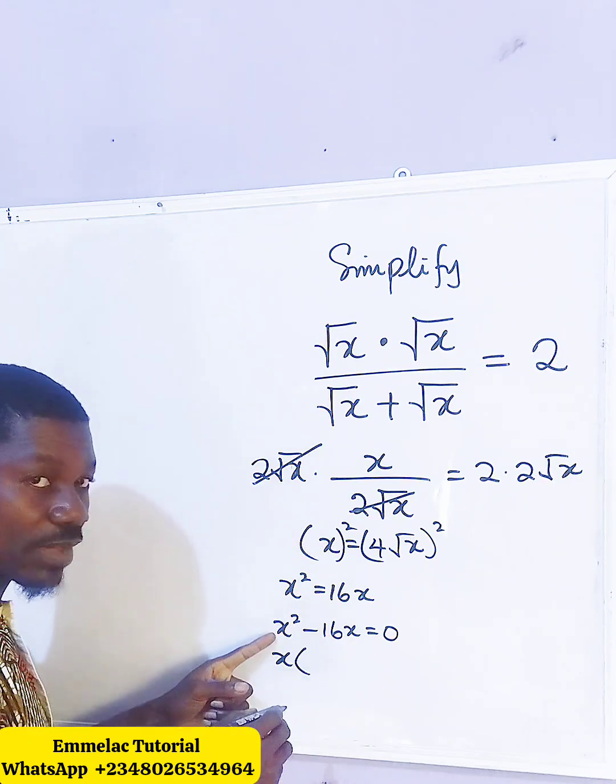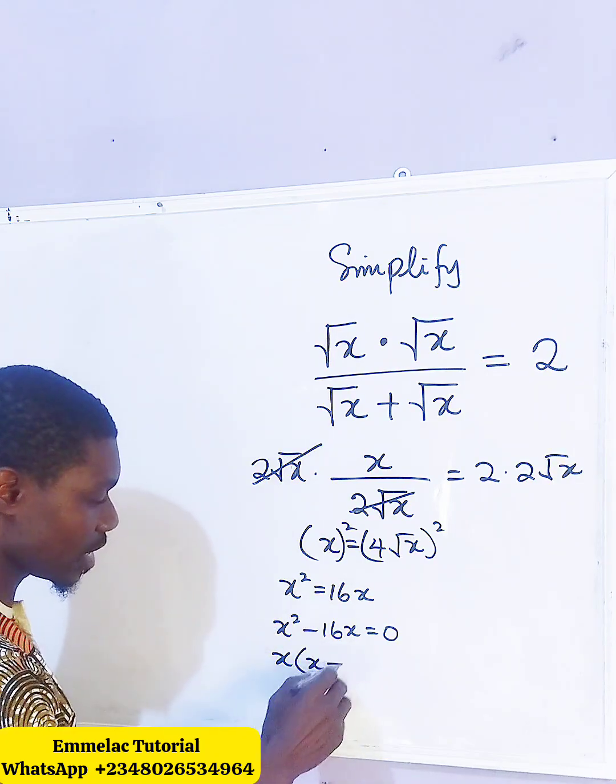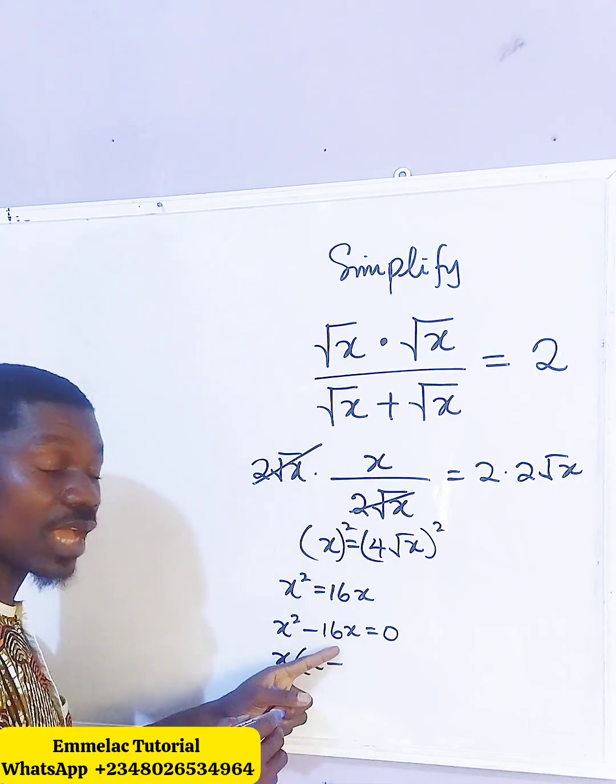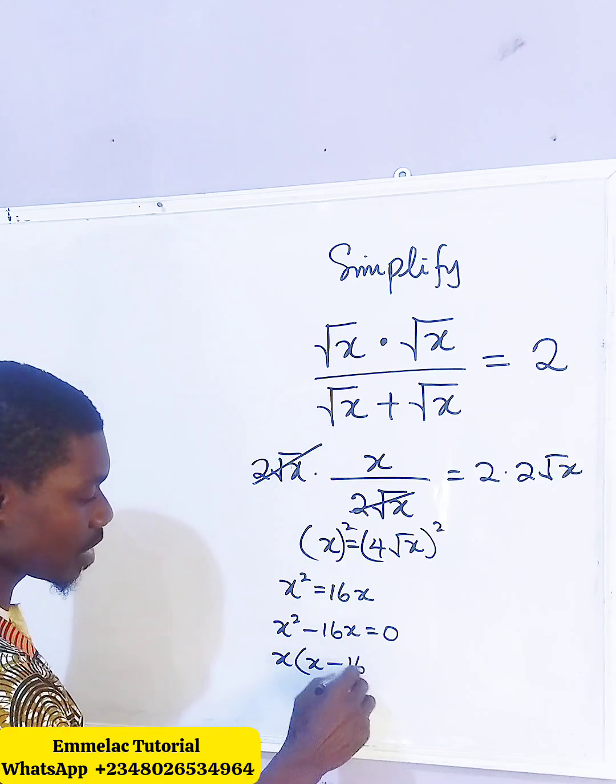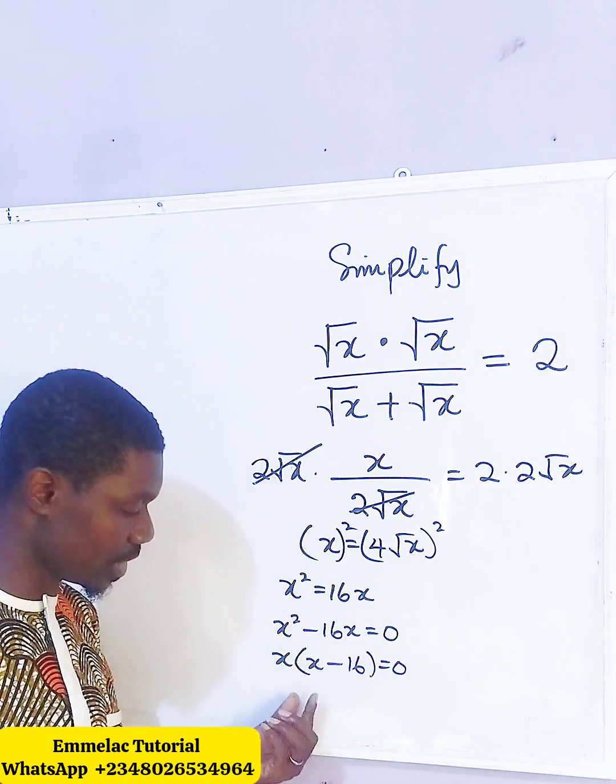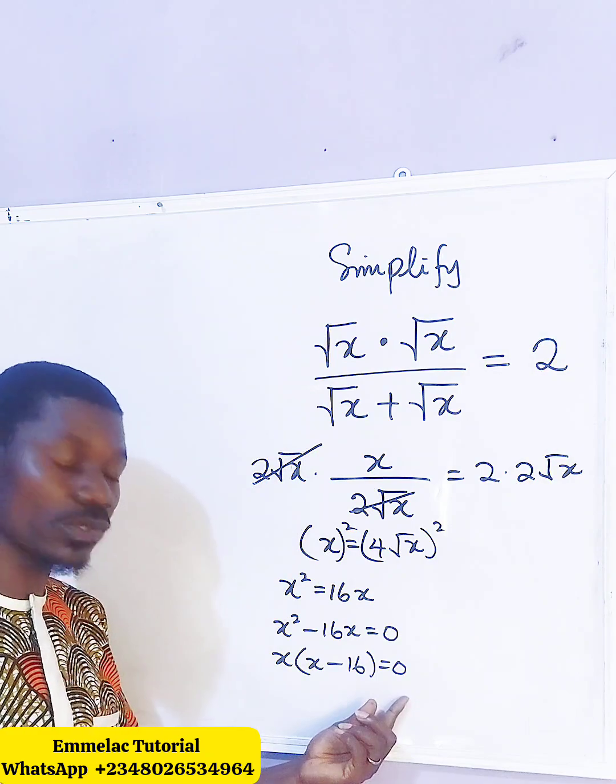We have to factor out x from x squared, we are left with x, then minus. Factoring out x from 16x, we are left with 16, which equals 0.